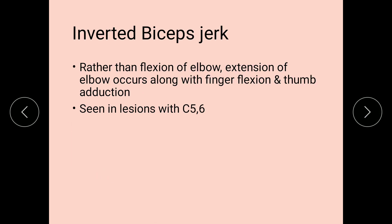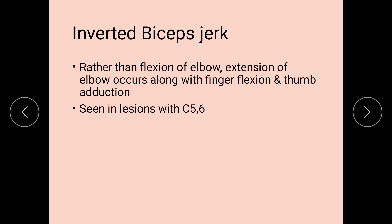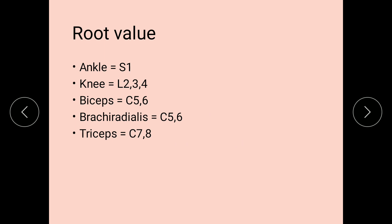Inversion of biceps jerk: when we do the biceps reflex, we expect elbow flexion, but rather than elbow flexion, extension of the elbow occurs along with finger flexion and thumb adduction. This is called the inverted biceps reflex, and it is seen in lesions of C5 and C6.